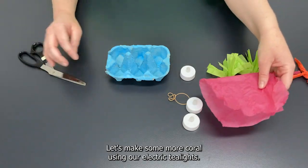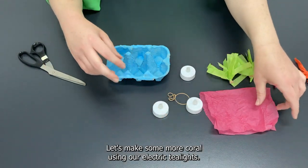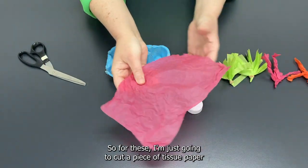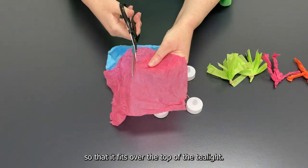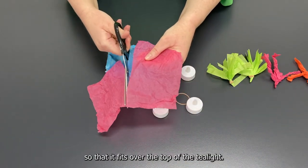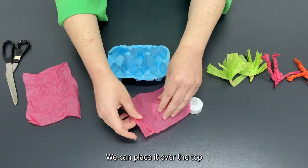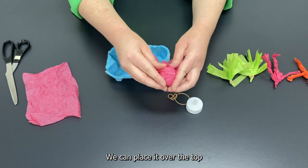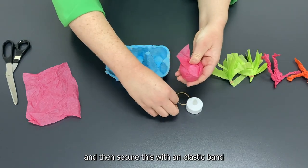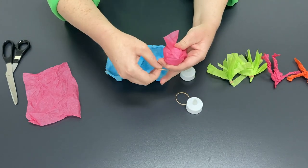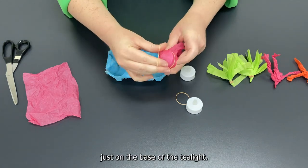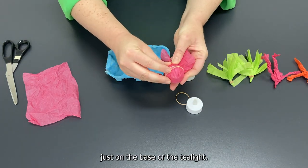Let's make some more coral using our electric tea lights. So for these I'm just going to cut a piece of tissue paper so that it fits over the top of the tea light. We can place it over the top and then secure this with an elastic band just on the base of the tea light.